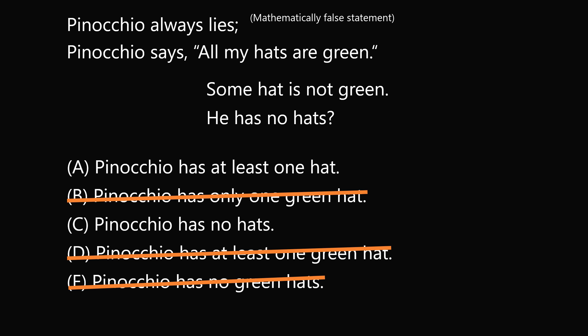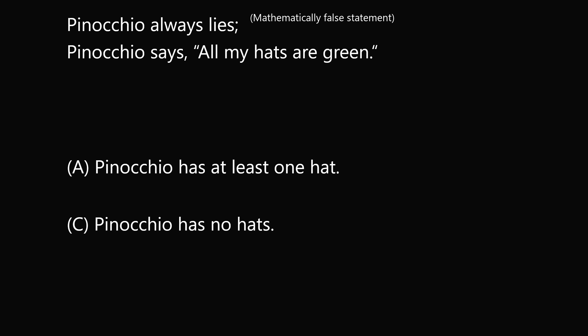Everyone agrees that B, D, and E should be eliminated. At this point, the social media discussion was about answer choices A and C, with many people feeling that both are correct. And they would both seem to be correct. Answer choice A: Pinocchio has at least one hat, and of course that one hat would not be green. In answer choice C: Pinocchio has no hats. When he says all my hats are green, that would be a lie because he has no hats. But in fact, answer choice C is wrong, and this is for a logical reason.